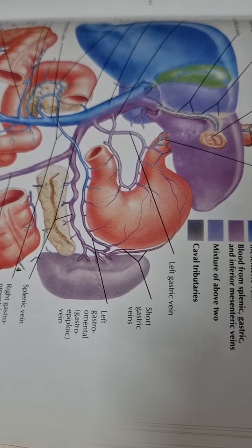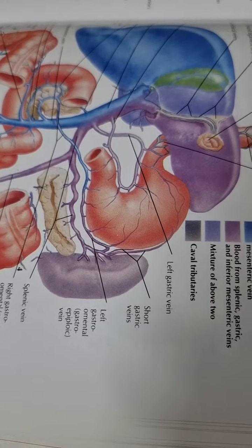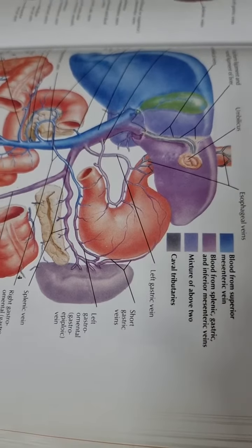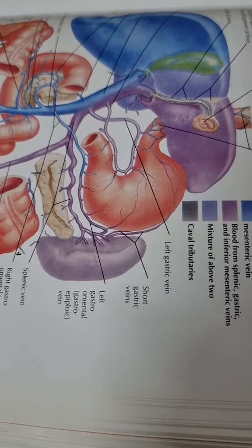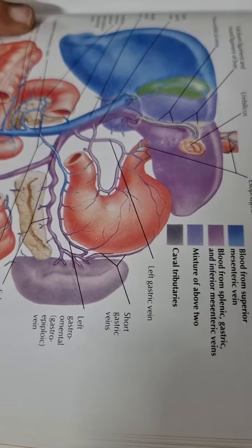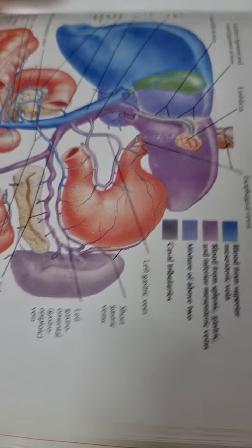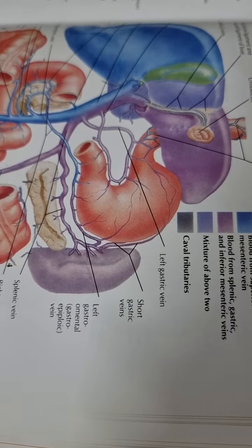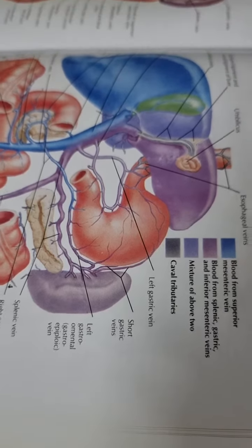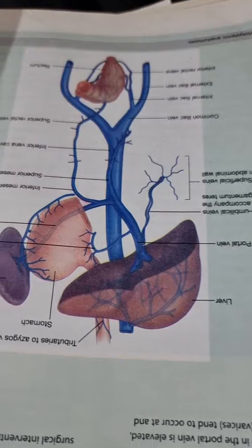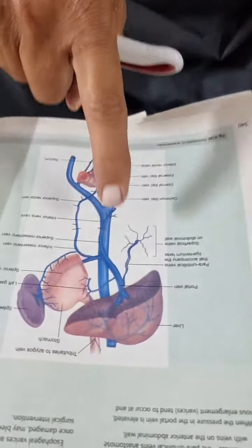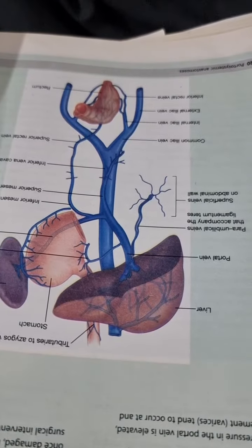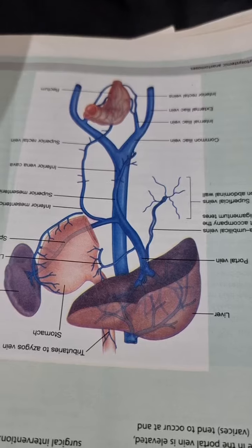Then it also opens into it is the cystic vein of the gallbladder. And then also the pancreatic duodenal vein. And note, don't forget that the paraumbilical veins which come from the skin around the umbilicus and pass downward also open into the portal vein.